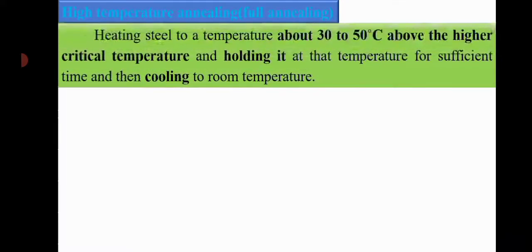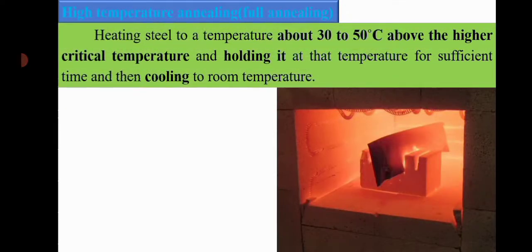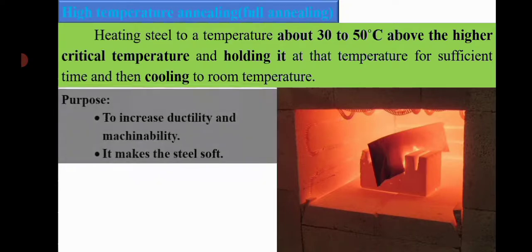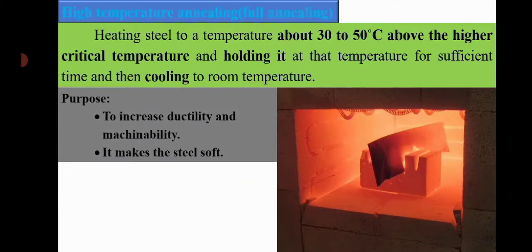High temperature annealing, also known as full annealing, involves heating the steel to a temperature about 30 to 50 degrees Celsius above the higher critical temperature, holding it for sufficient time, and then cooling to room temperature. Its purposes are to increase ductility and machinability and make the steel soft.